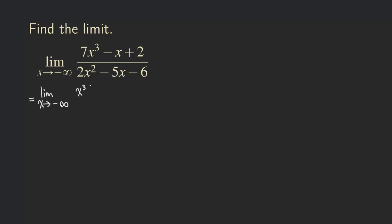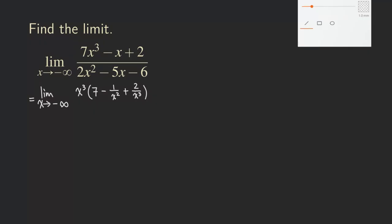After factoring out x cubed from the numerator, we get 7, then for the second term — since we factored out x cubed — we have 1 over x squared in the denominator, so it becomes negative one over x squared. And since there's no x in the constant term, factoring out x cubed gives us plus 2 over x cubed. That's our numerator.